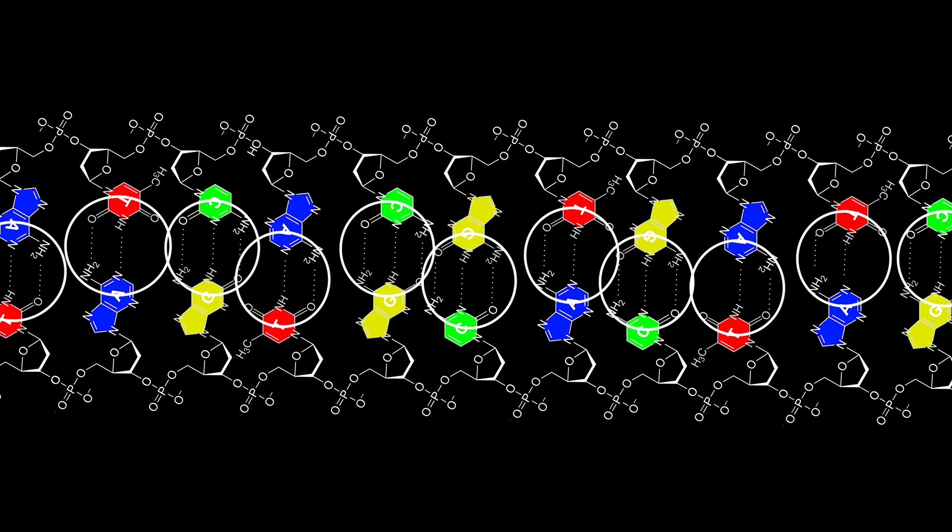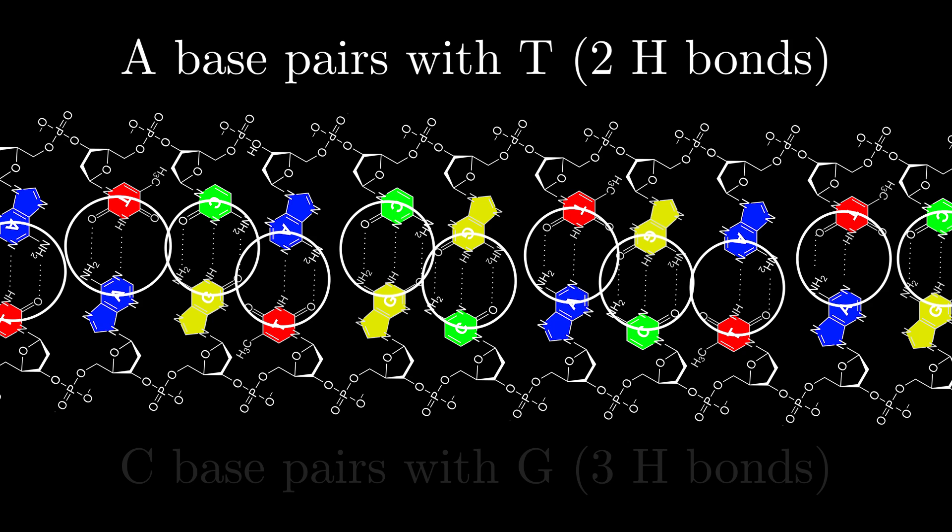The nitrogenous bases in each strand face each other and form hydrogen bonds across. Note that A always pairs with T, and C always pairs with G.